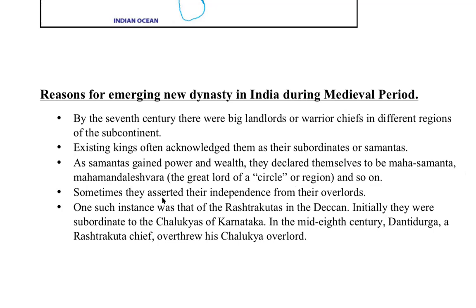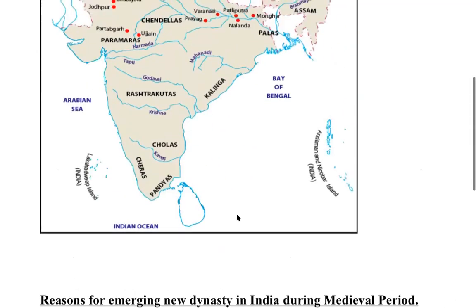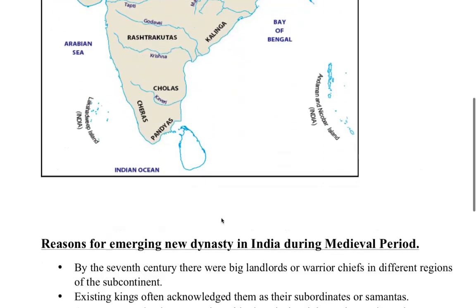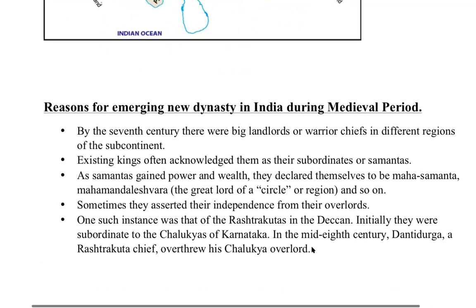Sometimes they asserted their independence from their overlords — they fought with their overlords, gained complete independence, and started ruling on their own. One such instance was that of the Rashtrakutas in the Deccan. They were powerful warriors who gained independence from their overlord and started ruling over the Deccan plateau.